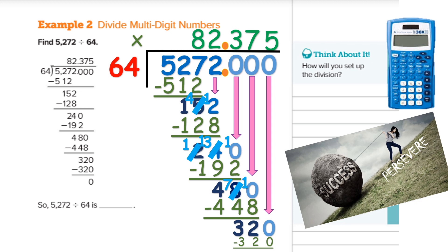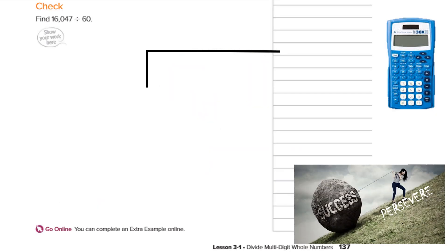This is not math that you are unable to do. You just have to follow the steps and repeat them until you get to a final answer. The final answer is 82.375. Circle it. Now, what about 16,047 divided by 60? The first number in an equation goes inside the box — it's my dividend. The second number is the divisor on the outside, and I need to find my quotient.